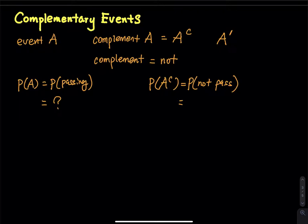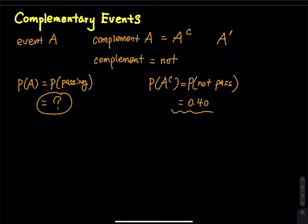Usually in this scenario, the probability of passing is extremely difficult to find — it takes you 10 hours of work. But it only takes you 10 seconds to find the probability of not passing. So let's say the probability of not passing is 0.40. My choice is to spend 10 seconds to find the probability of the complement, which equals 0.40. Then to find the probability of passing, all you do is take 1 minus 0.40, which equals 0.60.